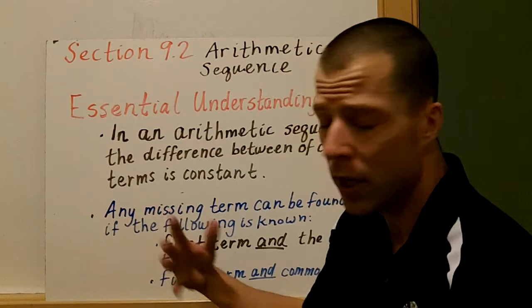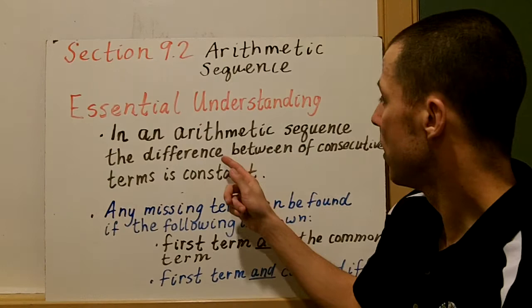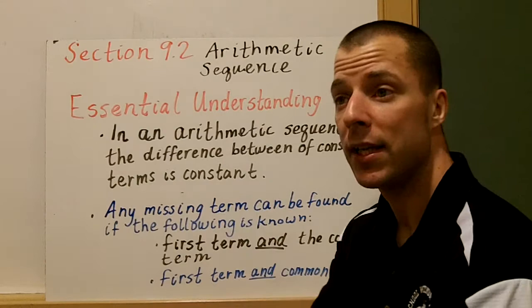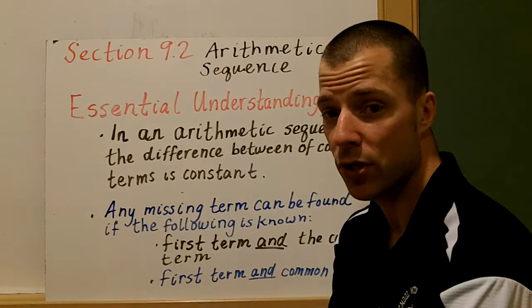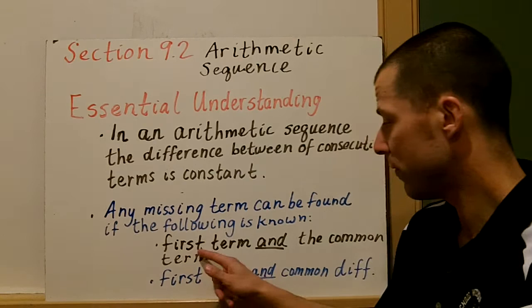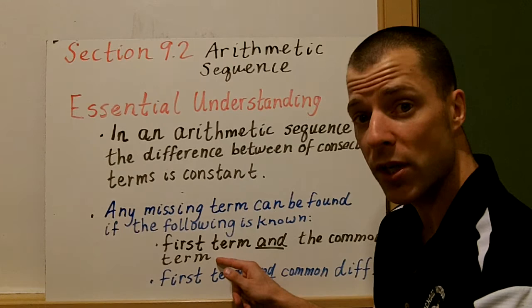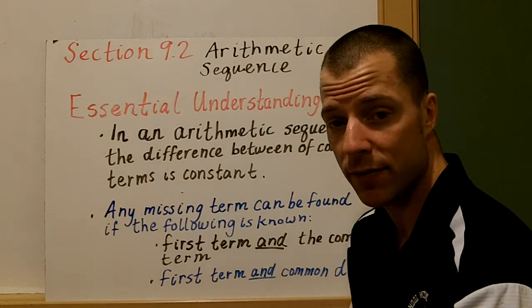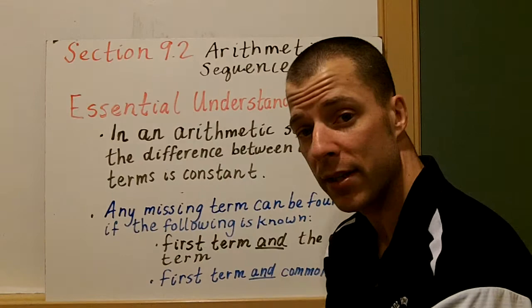Your essential understanding out of section 9.2: in an arithmetic sequence, the difference between consecutive terms is constant, meaning it's the same. When we look at a term and one right after the other, the difference is always going to be the same all the way through. A constant is just a number. Any missing term can be found if you know the first term and a common term, or if you know the first term and the common difference, you can write the equation.